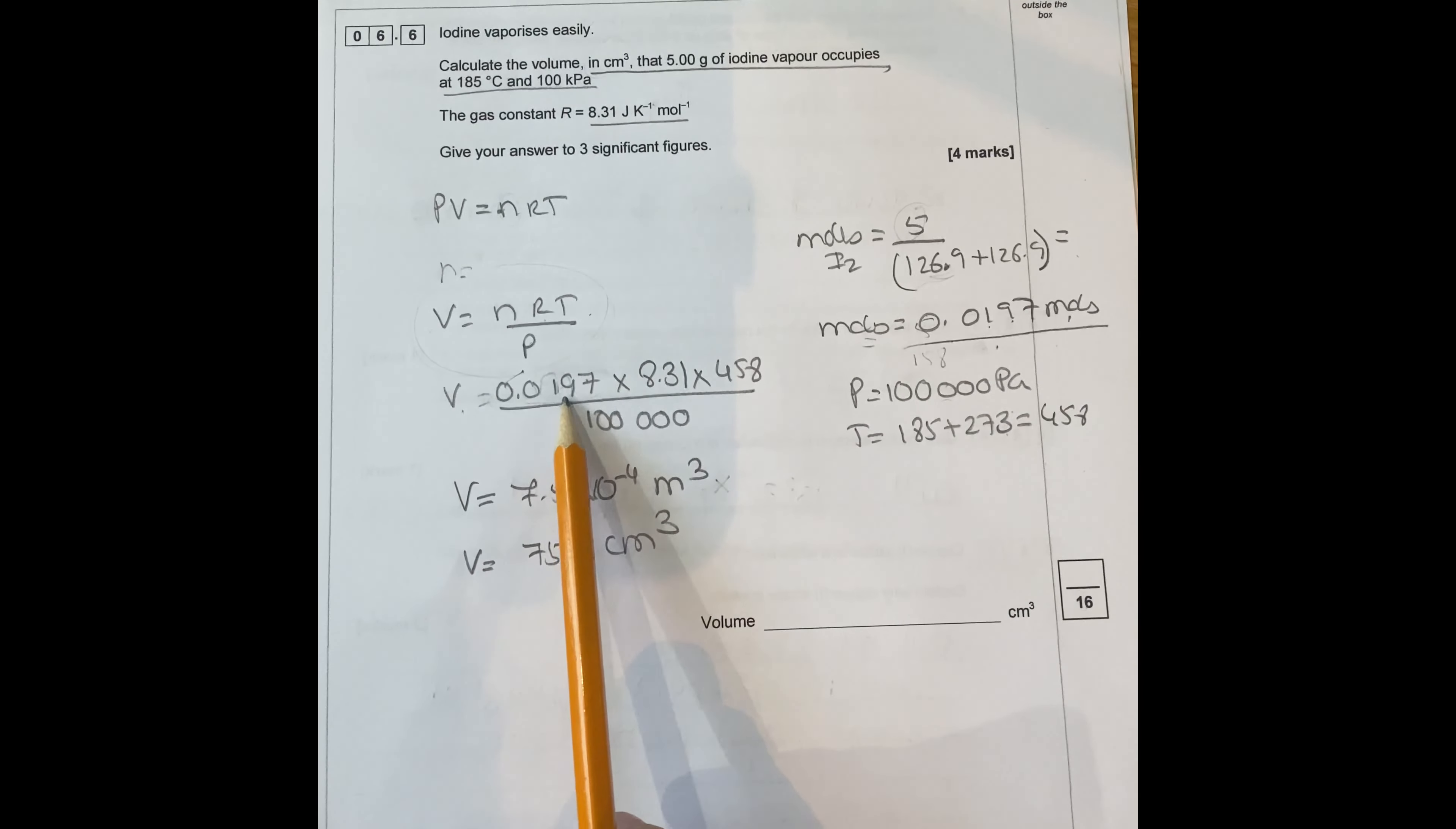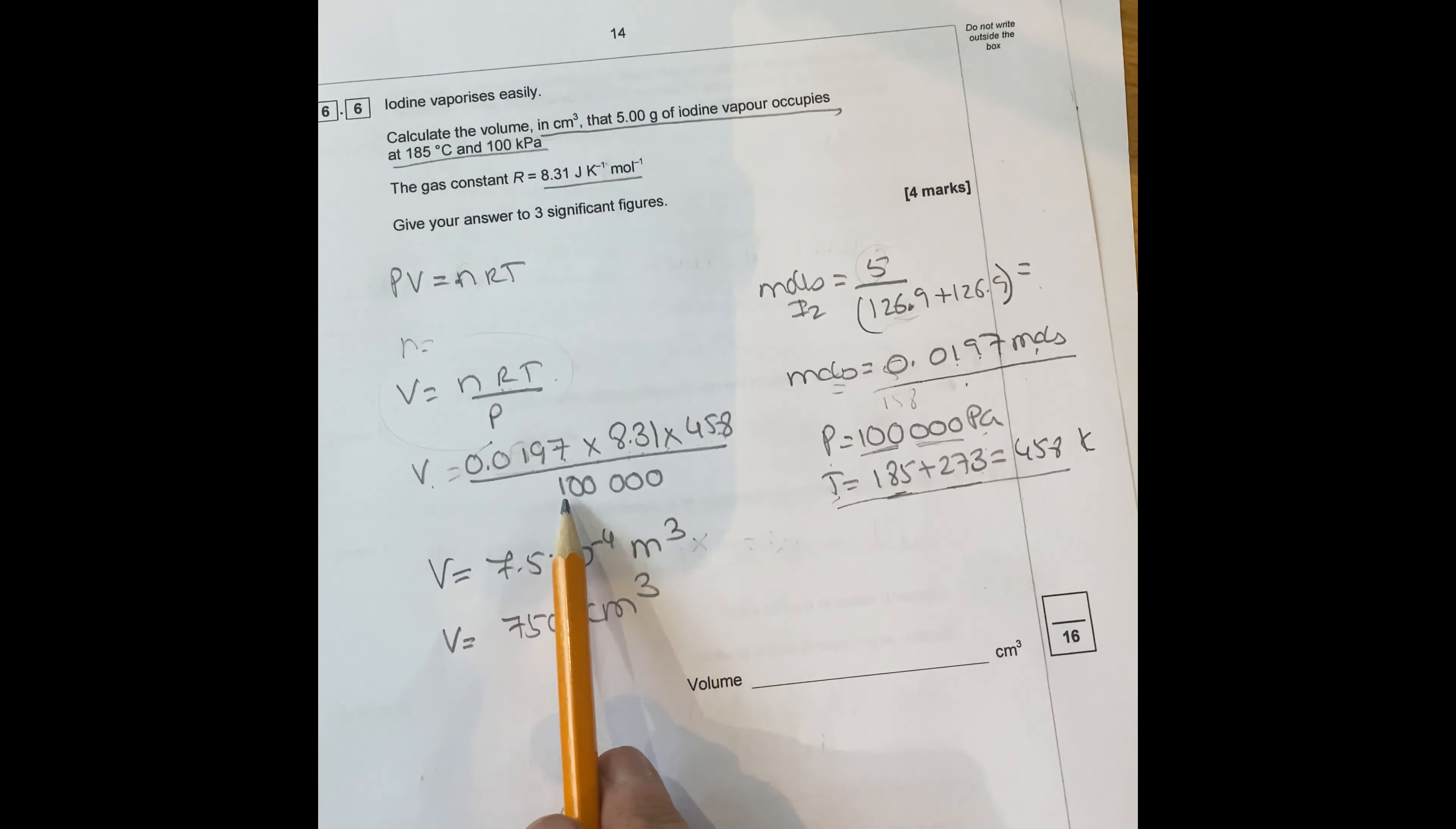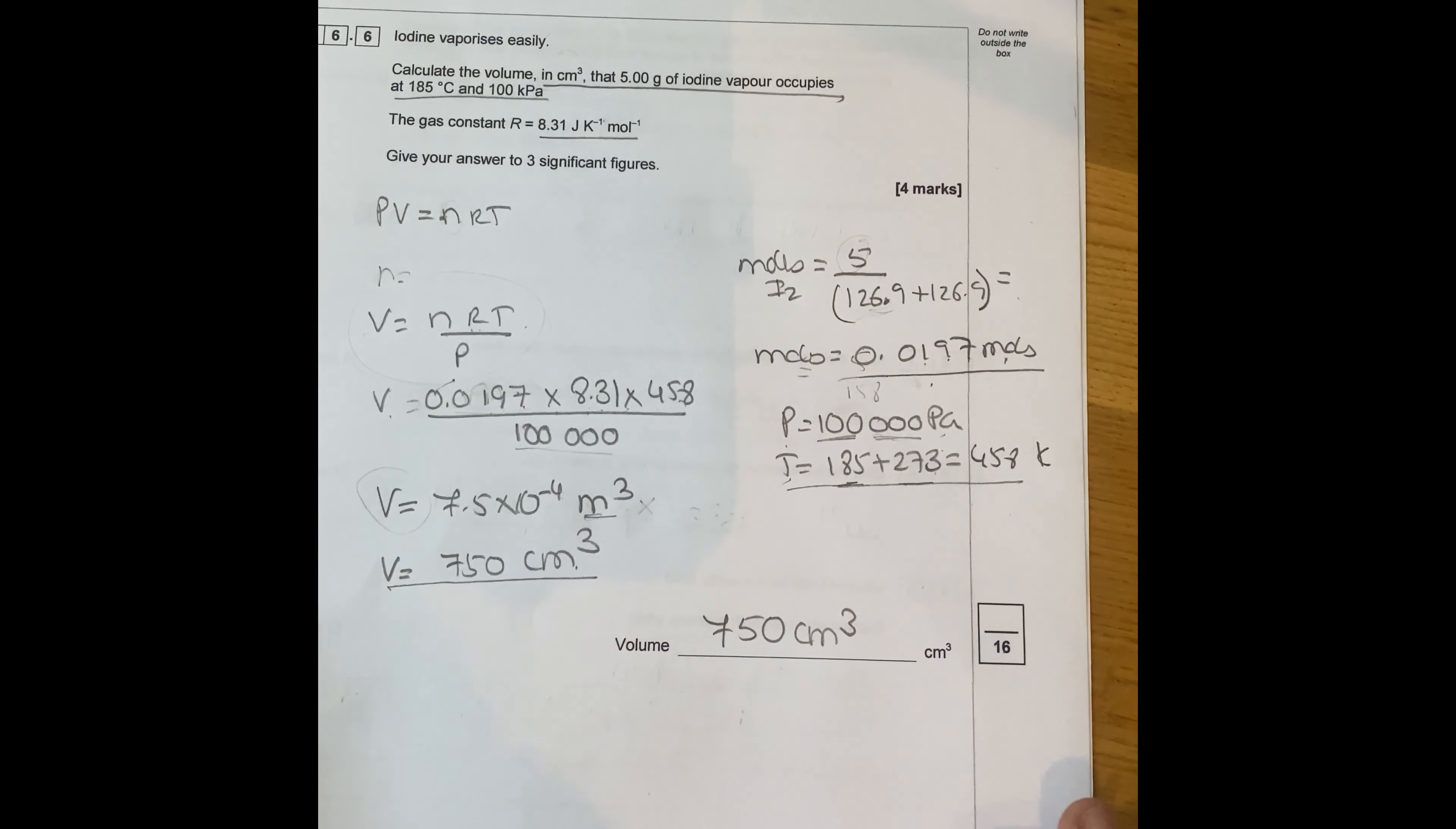So once you've got the moles, you go to this equation, rearrange to find volume. So rearrange will be V equals NRT divided by P. And then you've got, replace 0.0197 moles times R, which is 8.31 times 458. Now the temperature has to be changed for Kelvin. So 458 is Kelvin. I gave you 185. You add 273 to it and pressure. Yes. They give you a hundred. You've got to change for Pascals. So you've got to multiply by a thousand. So you put it on there, it would divide by a hundred thousand. Then the volume you get is in meters cubed. So you've got to multiply that by a thousand and multiply again by a thousand. And then it will give you 750 centimeters cubed because it's three sig figs. So you can put 750. That's the answer to your question.